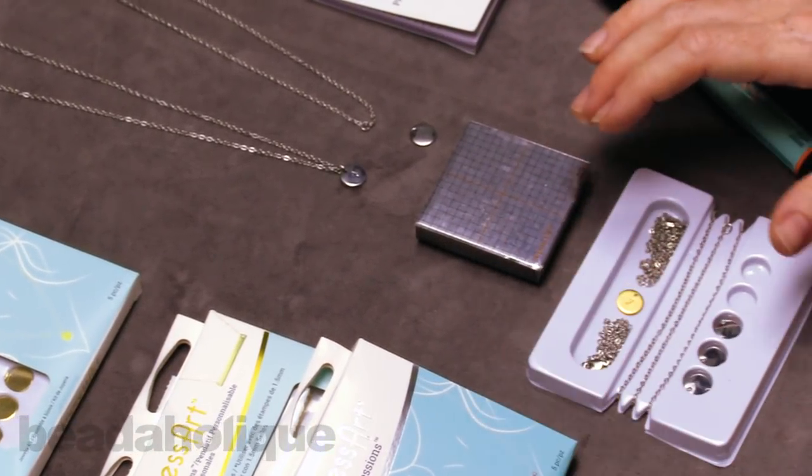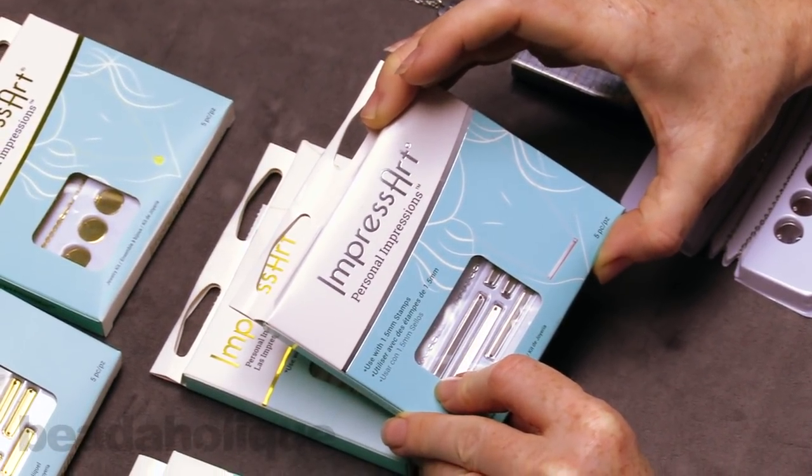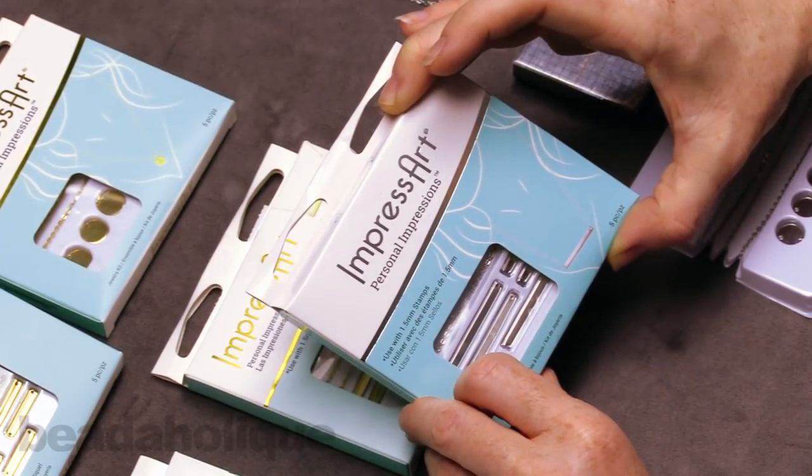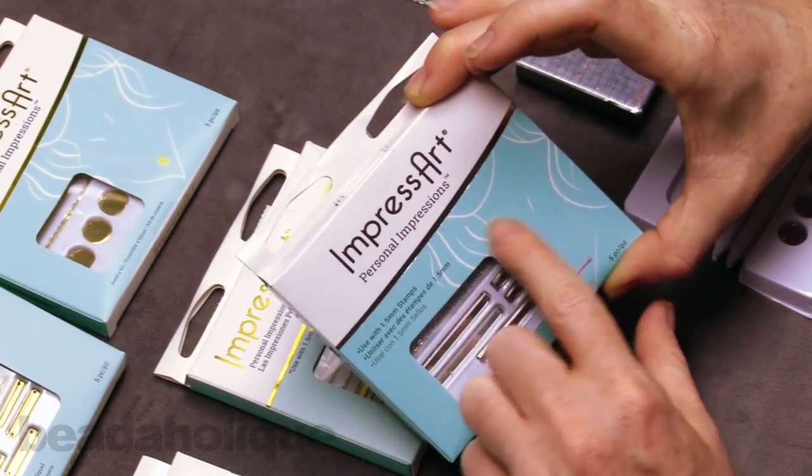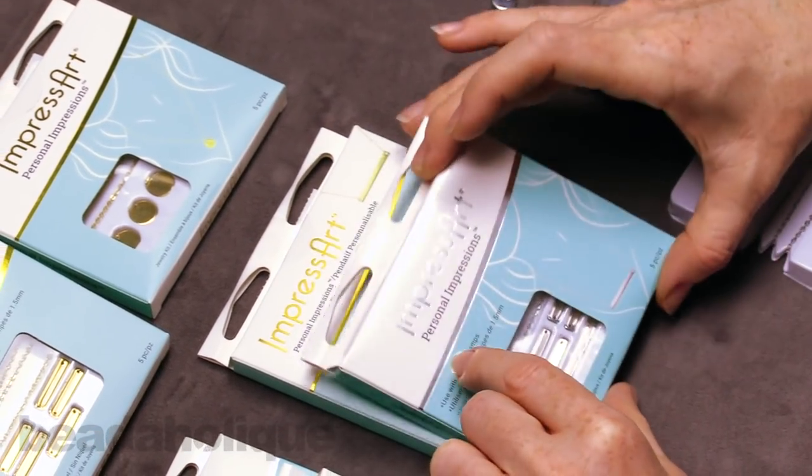There's a couple different styles. You have a long rectangular bar and this one here measures 38 millimeters long and it tells you to use it with a 1.5 millimeter stamp and you can kind of see here on their little illustration what that would look like. So great for writing a date or a name on it.